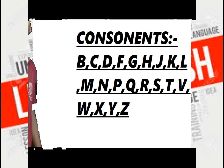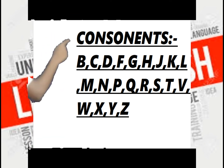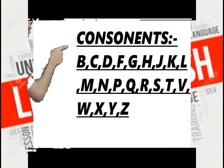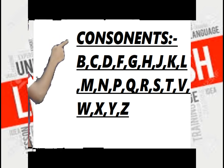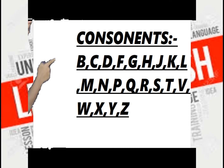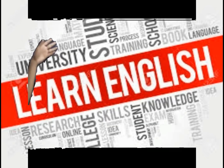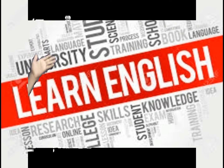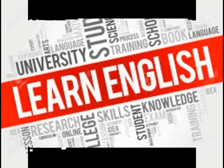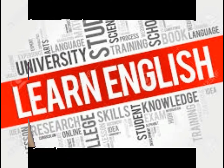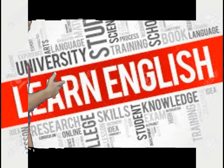When we come to consonants, consonants include B, C, D, F, G, H, J, K, L, M, N, P, Q, R, S, T, V, W, X, Y, Z. These are the consonants. So, these are the two types of letters in the alphabet. Here we mainly have to concentrate on vowels because vowels give sound to any word.